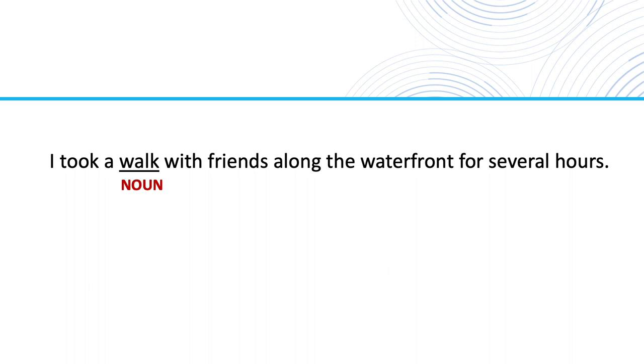And they find other examples that don't even use 'walk' as a verb. For example, 'I took a walk with friends along the waterfront for several hours.' We can see that 'walk' is a noun in this sentence because it has an article: 'a walk.' When linguists use a corpus to study grammar, it affects what they understand about grammar and how we teach it.